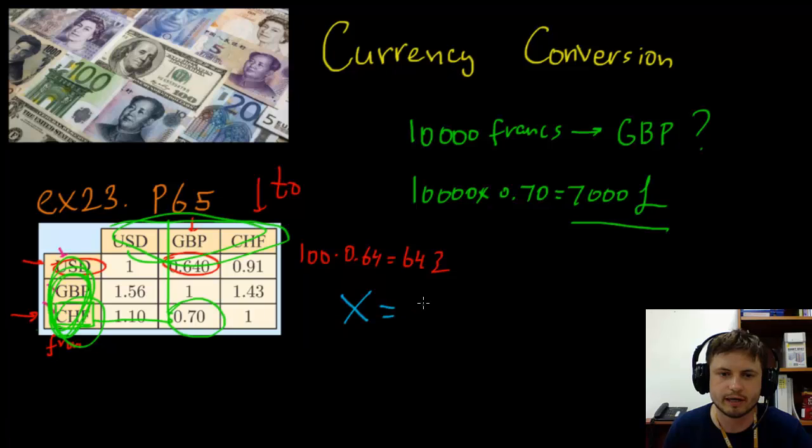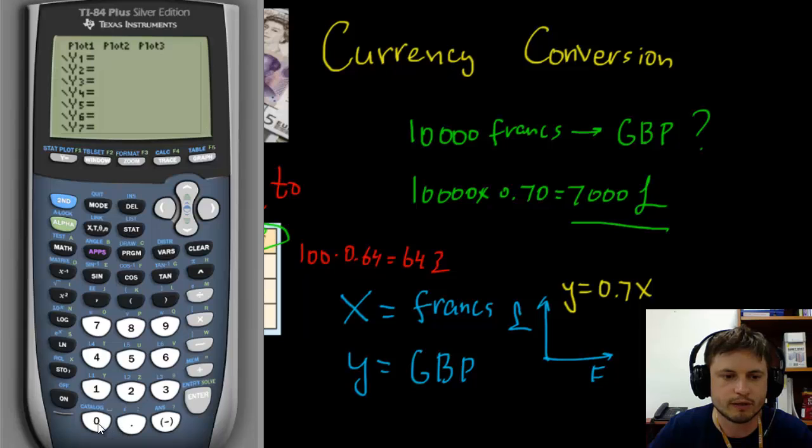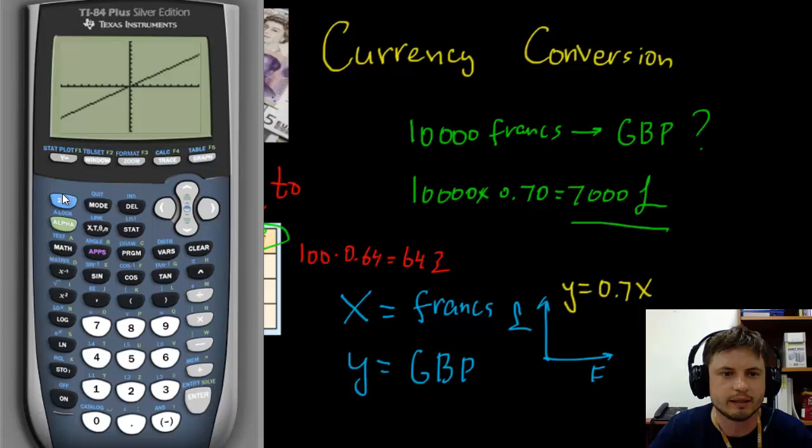So our X axis is going to be francs and our Y axis is going to be pounds. If you remember your algebra from grade seven eight, basically this is going to be very simple function of Y equals 0.7X, and that's what we're going to enter in our GDC. So go into your Y function, 0.7X, and then enter, graph it. It's going to look like this. And of course here you can either go by calc and find value, or you can just go into the table and look at these values.